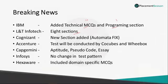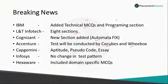Regarding L&T Infotech, they are conducting a test with eight sections — including psychometric, SQL query, essay writing, coding, and other aptitude basics. Please refer to our last week's webinar video if L&T is visiting your college soon. Cognizant has included pseudocode in their recruitment pattern. There is no change in Infosys test pattern as of now. Hexavar has included domain-specific MCQs, so you need to concentrate on your domain alongside aptitude and logical reasoning.